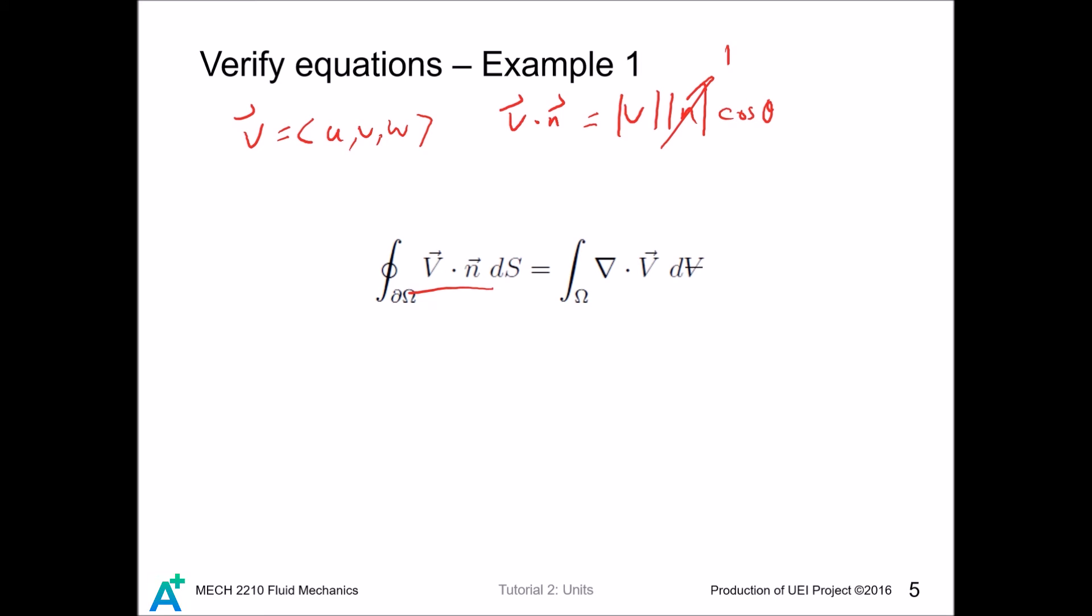And this goes to 1. So, this dot product just have the same unit as the magnitude of the velocity, which has units of length divided by time. The term ds is a small area. So, it has dimension of length squared. So, we conclude the left-hand side has dimension of length to the power 3 divided by time.